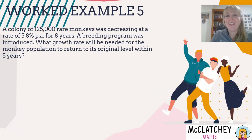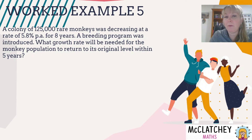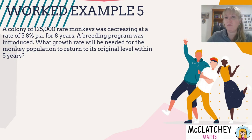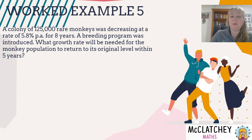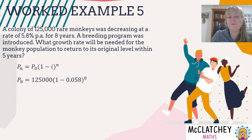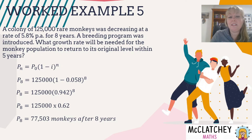Final example: A colony of 125,000 rare monkeys was decreasing at 5.8% per annum for eight years, after which a breeding program was introduced. What growth rate is needed to return the population to its original level within five years? This involves two stages: a decline phase and a growth phase. First, applying the depreciation formula: 125,000 × (1 − 0.058)⁸ = approximately 77,503 monkeys remaining at the end of eight years.